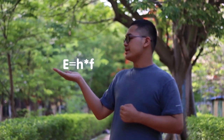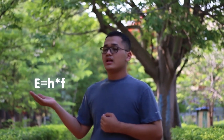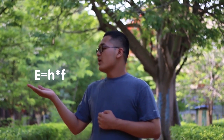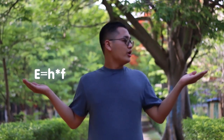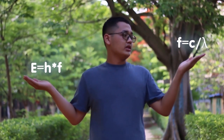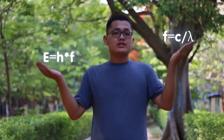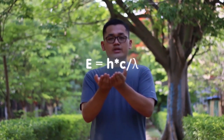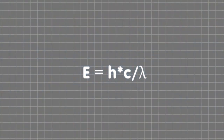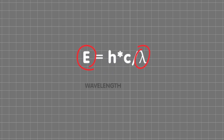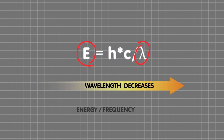Why? Well, this is the wave-energy equation. Since energy and frequency are directly proportional to each other, the more energy, the higher the frequency emitted. And this is the equation of wave frequency. If we substitute that into the wave-energy equation, we get this result. According to this equation, energy is inversely proportional to the wavelength. Therefore, the more the wavelength decreases, the more the frequency and energy increase.